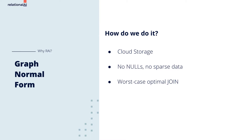Fully normalized data means many relations, and queries require large N-way joins that would kill a typical database. But RAI's dovetail join technology processes all arms of the join in parallel, operating more efficiently the more arms there are.